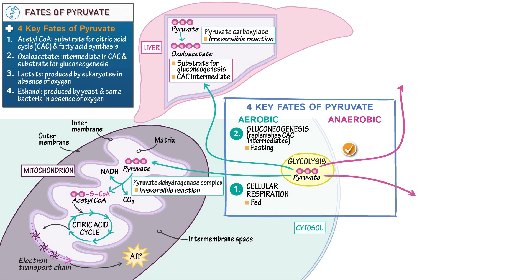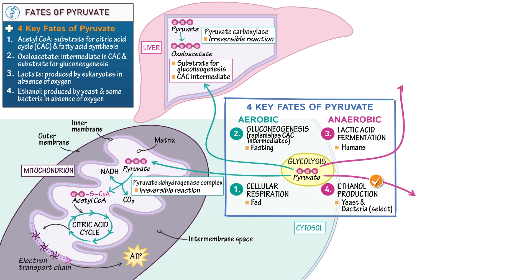This brings us to the two final pathways, which occur in the absence of oxygen: lactic acid fermentation — lactate production — which occurs in humans, and ethanol production, which occurs in yeast and select bacteria. Let's start with lactate production. Indicate that it occurs in exercising muscle and red blood cells.